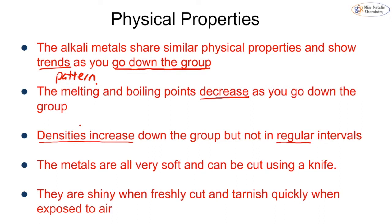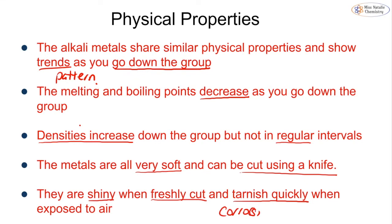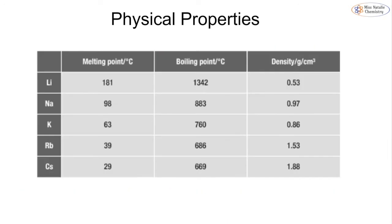All of the alkali metals are very soft and can be cut using a knife. They are very shiny when freshly cut, but they tarnish very quickly when exposed to air — tarnish being another way of saying they corrode on contact with air. Remember, we don't call it rusting unless we're talking about iron. You can see that melting and boiling points decrease down the group, while density increases.